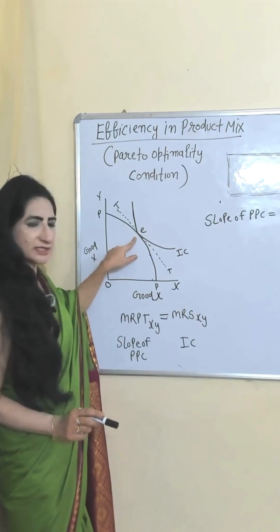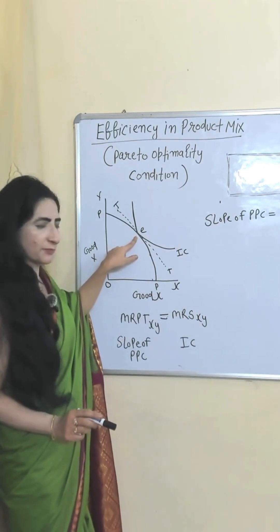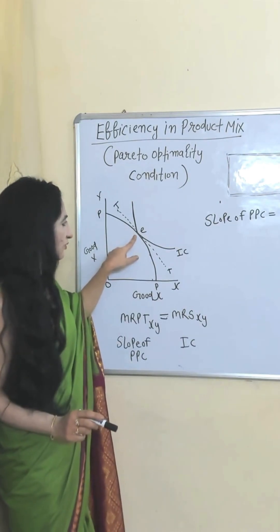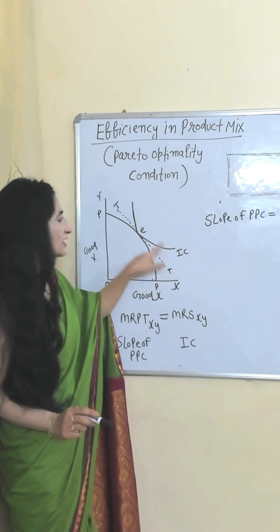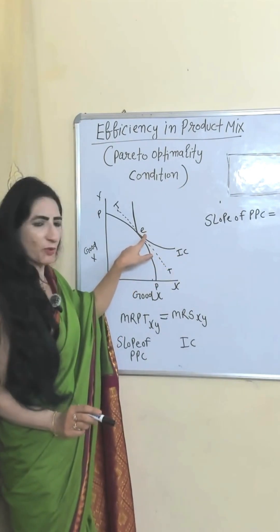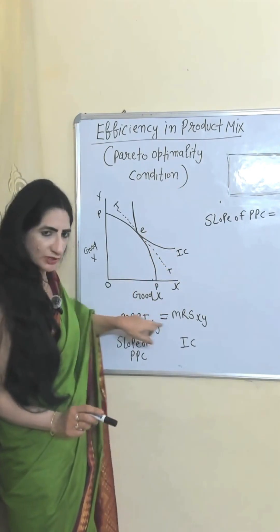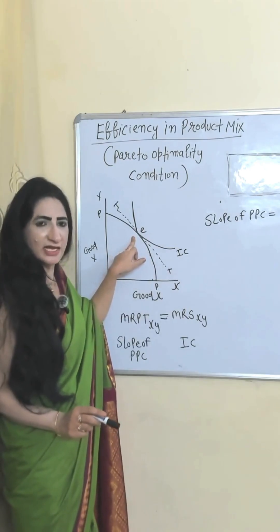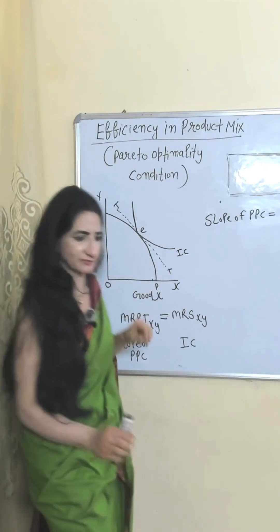At point E, you can see that the slope of the production possibility curve is equal to the slope of the indifference curve. So at point E, these two are equal to each other. Therefore, point E satisfies this condition.